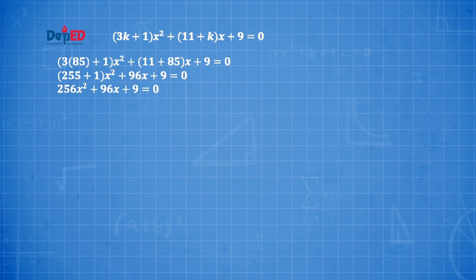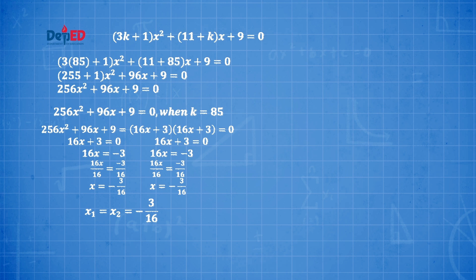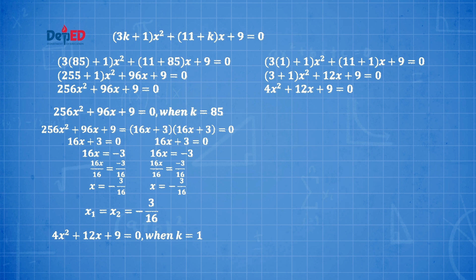Substituting the obtained values of k: when k = 85, the equation becomes 256x² + 96x + 9 = 0, and its roots are both equal to −3/16. When k = 1, the equation becomes 4x² + 12x + 9 = 0, and its roots are also equal: x₁ = x₂ = −3/2.